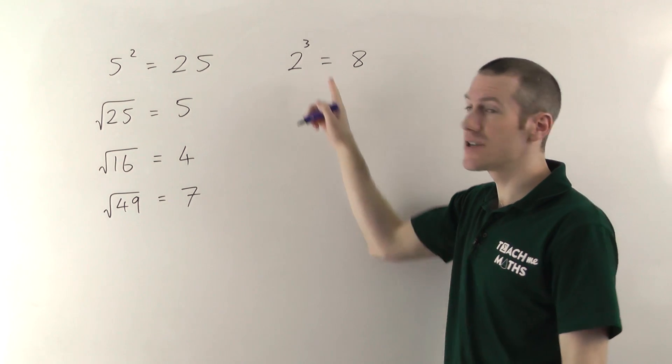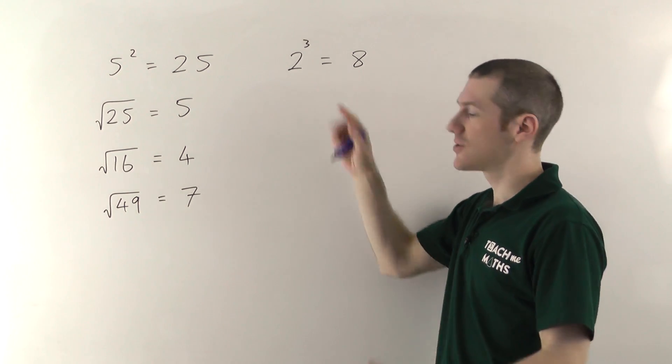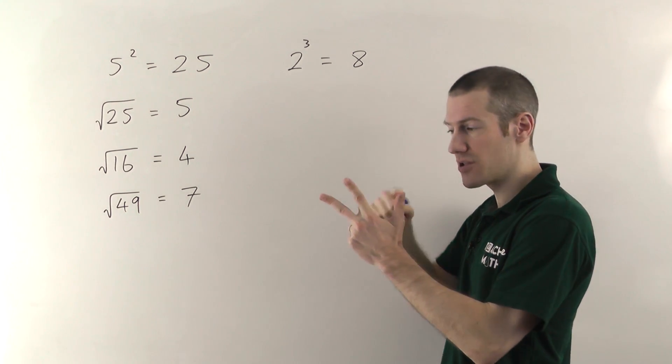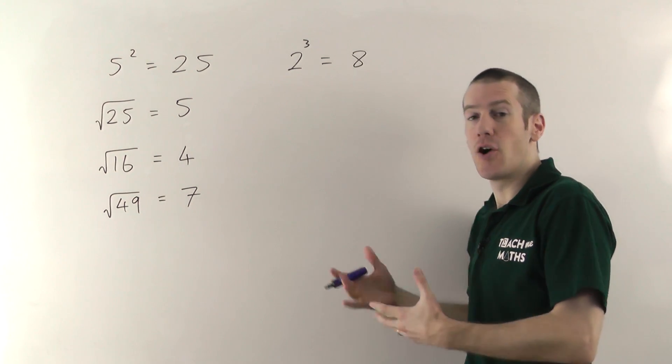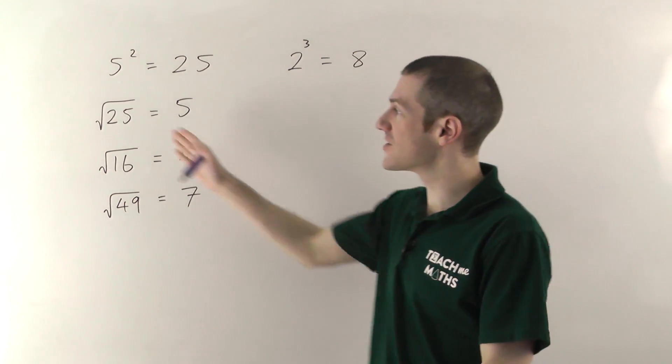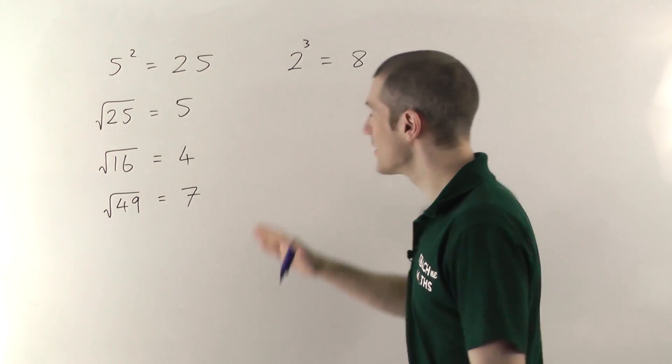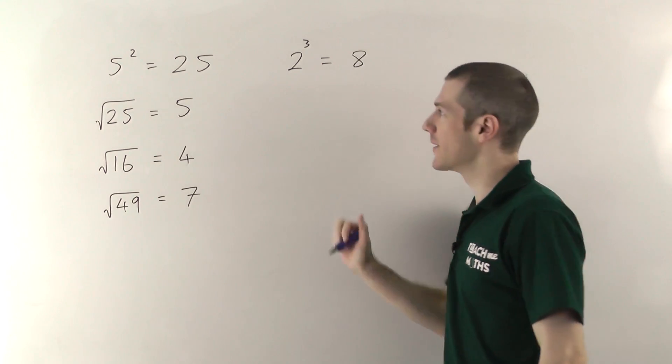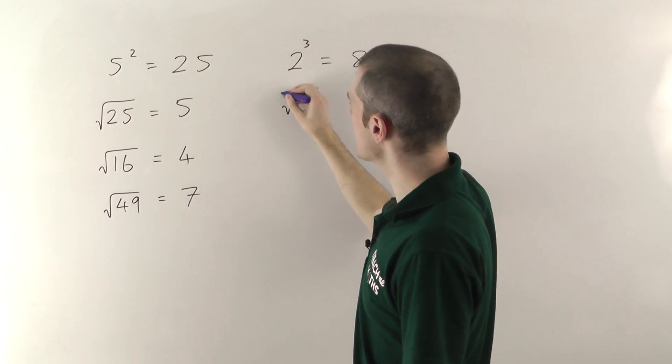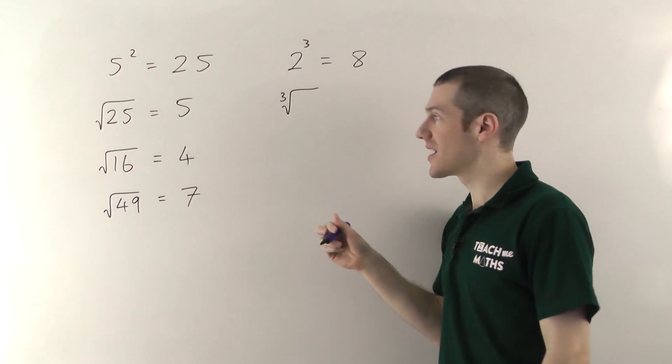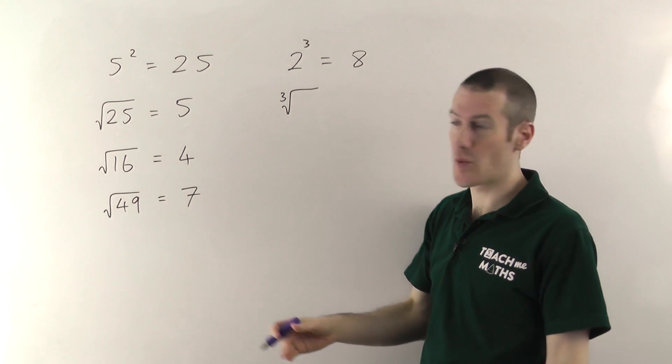Again it's not 2 times 3, it's not 6. It's 2 times 2 times another 2. There are three 2's all multiplying each other. The cube root is the opposite of cubing. In the same way that the square root is the opposite of squaring, the cube root is the opposite of cubing. And the symbol is exactly the same as the square root symbol except you stick a little 3 there to indicate that you're cube rooting rather than square rooting.